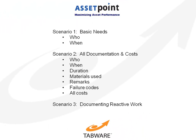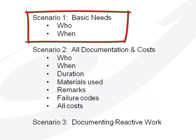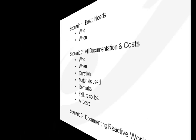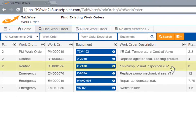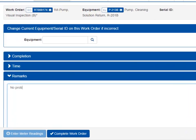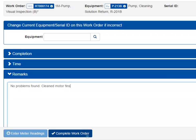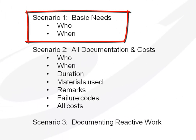Let's go through three key scenarios following a crawl, walk, run approach to documenting maintenance work. Scenario 1: work simply needs to be completed with accountability of who completed the work and when. We select a work order we need to complete and click Quick Completion. As this was a visual inspection, we may go straight to remarks to enter our findings, then click Complete the Work Order. Scenario 1 called for basic needs, and those needs were met in a few seconds.